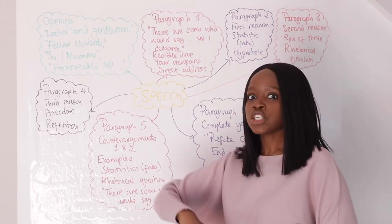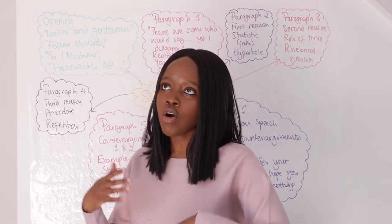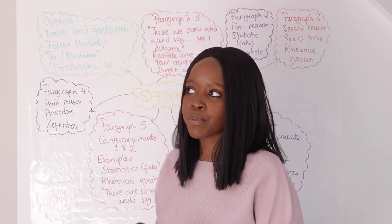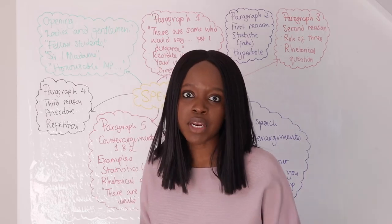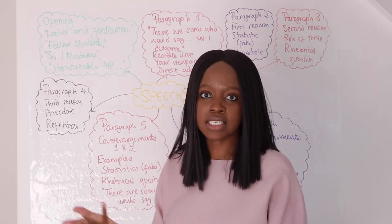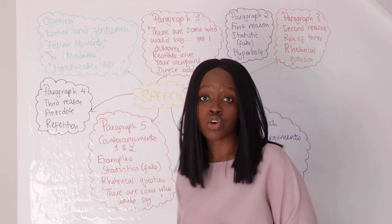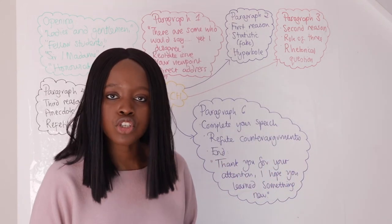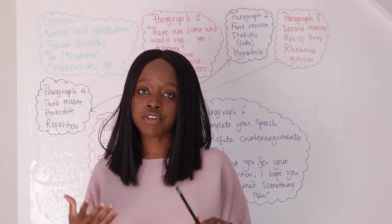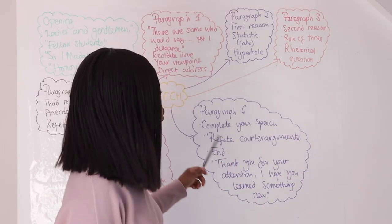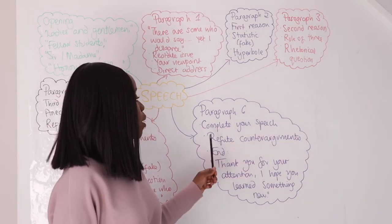You can give statistics to counter that and support their perspective — for example, 'The University of Oxford found that people who lived in Hampshire believed climate change was not a big deal and had never been affected by it.' You can also add a rhetorical question. After showing your counter arguments and demonstrating appreciation for different viewpoints, you end the final part of your speech in paragraph six.